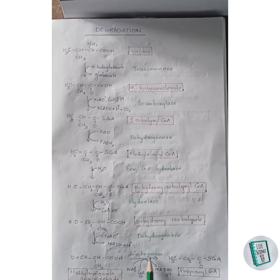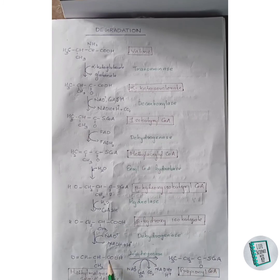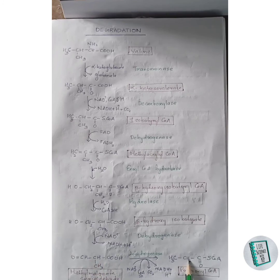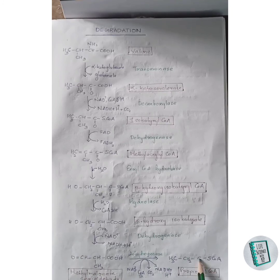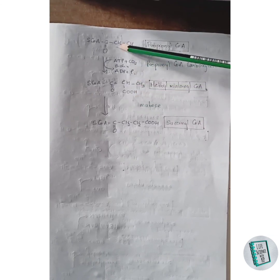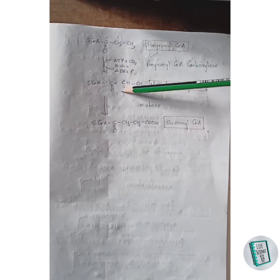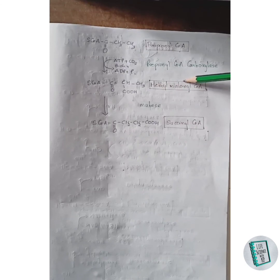Methylmalonate semialdehyde undergoes dehydrogenation in the presence of dehydrogenase enzyme to form propionyl-CoA. The COO group is removed as CO2, the hydrogen attaches to the CH group forming CH3CH2, hydrogens are removed with NAD+ as NADH2, and the S-CoA attaches to this carbon, forming propionyl-CoA. Propionyl-CoA then undergoes carboxylation in the presence of ATP and biotin to form methylmalonyl-CoA, where CO2 attaches to this carbon. Finally, methylmalonyl-CoA undergoes rearrangement of atoms in the presence of mutase to form succinyl-CoA. This completes the synthesis and degradation of valine.